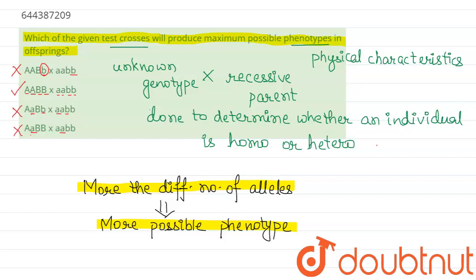Hence, we have the final answer as the test cross which will produce maximum possible phenotypes in offspring is AABB crossed with aabb.